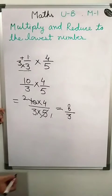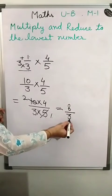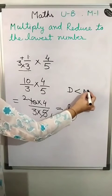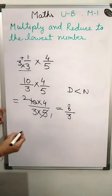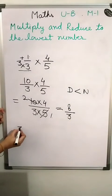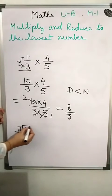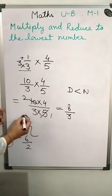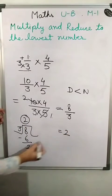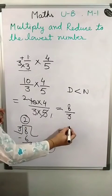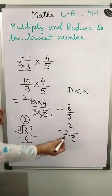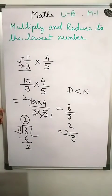This time the denominator is less than the numerator, so it is an improper fraction. We divide: 3 goes into 8 — 3 twos are 6, remainder is 2. Write 2 in the middle, and the denominator stays 3. The answer is 2 and 2/3.